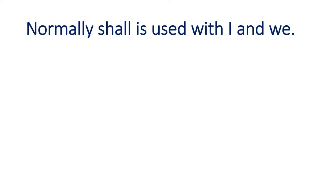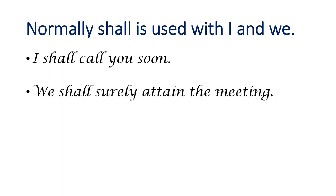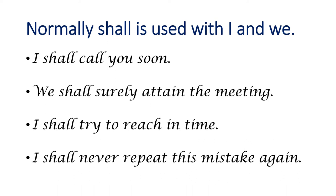Normally, shall is used with I and we — first person pronouns. यानि कि प्रथम पुरुष के साथ हम shall का उपयोग करते हैं — I and we के साथ. For example: 'I shall call you soon' (मैं तुम्हें जल्द ही बुलाऊंगा). 'We shall surely attend the meeting' (हम meeting जरूर अटेंड करेंगे). 'I shall try to reach in time' (मैं समय पर पहुँचने की कोशिश करूंगा). 'I shall never repeat this mistake again' (मैं यह गलती दोबारा कभी नहीं करूंगा).